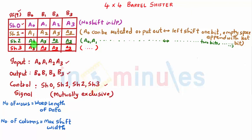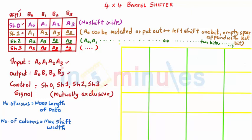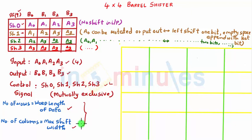Now we've understood what will happen for shift 0, shift 1, shift 2, and so on. Let's go ahead and understand how to make a pass transistor logic for this. I've made a 4x4 grid. The number of rows equals the word length of the data, which is 4, and the number of columns equals the maximum shift width, which is also 4. Alternatively, it's simply a 4x4 barrel shifter, which gives you the same answer.